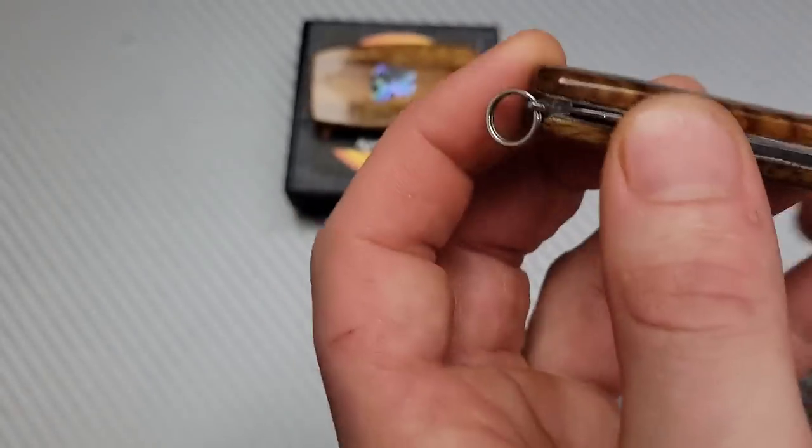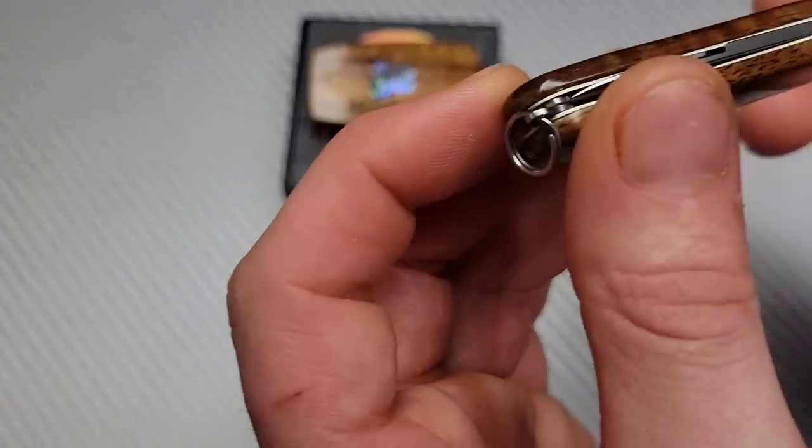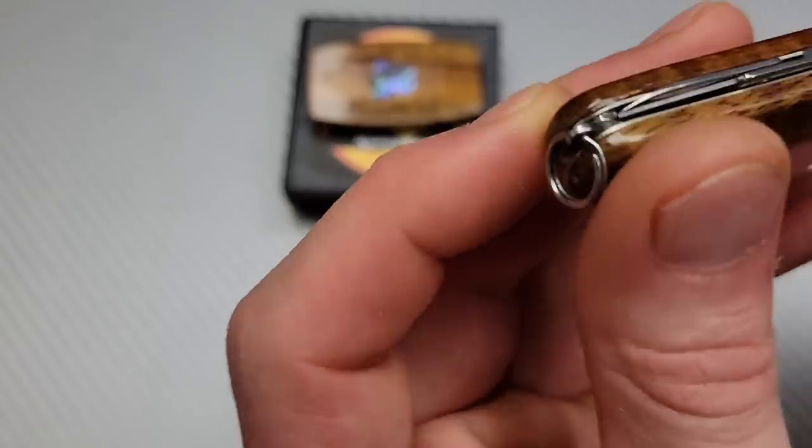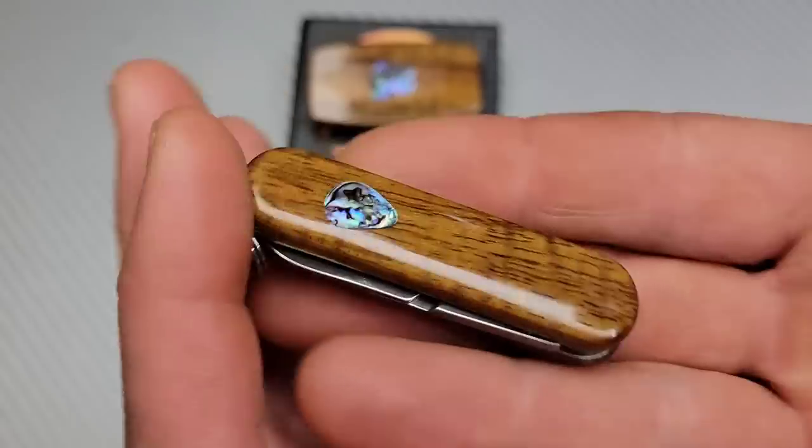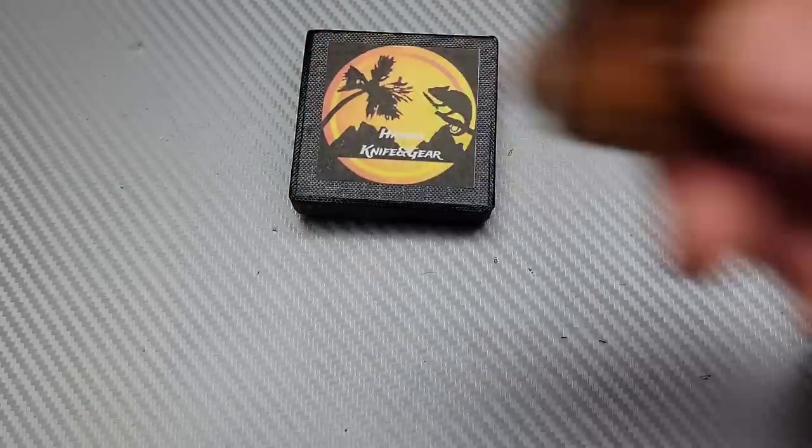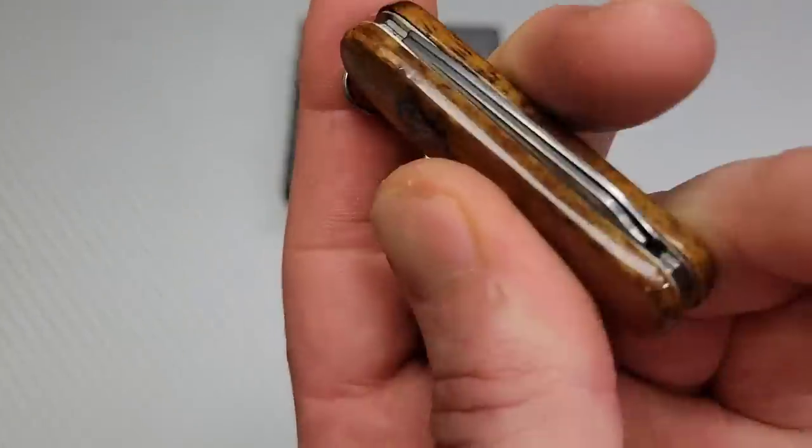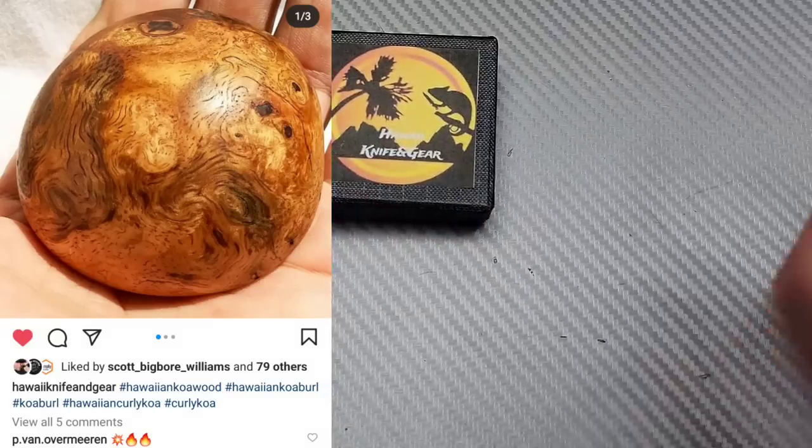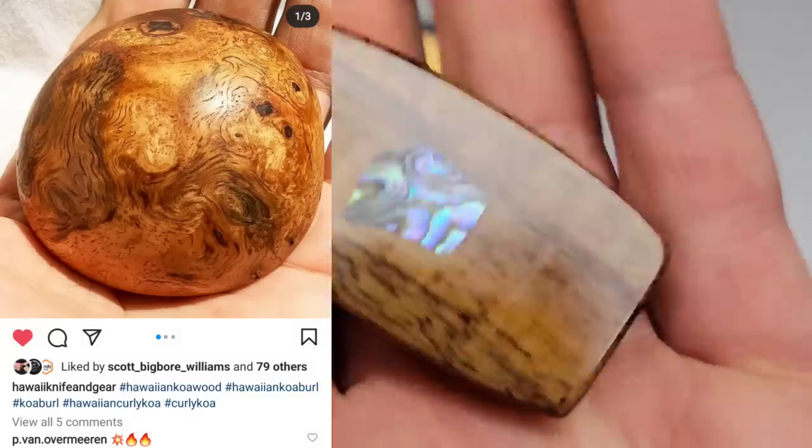This is a little Victorinox. What he basically does is he takes other things that have some sort of scale and he modifies them by taking off the original scale and putting on the koa wood that he makes by hand. He does this all by hand and it's amazing work.